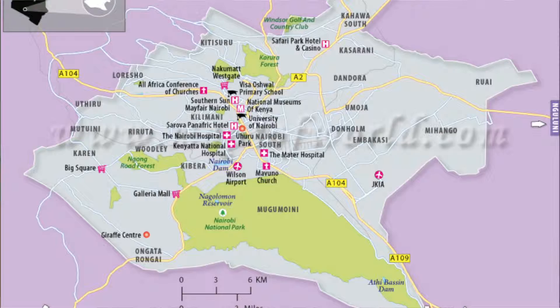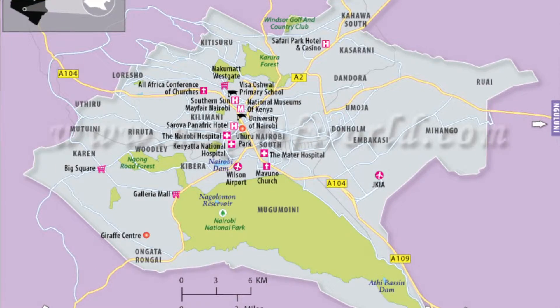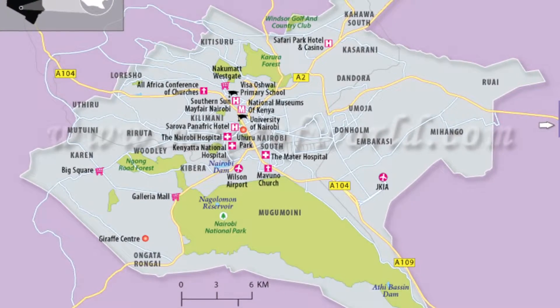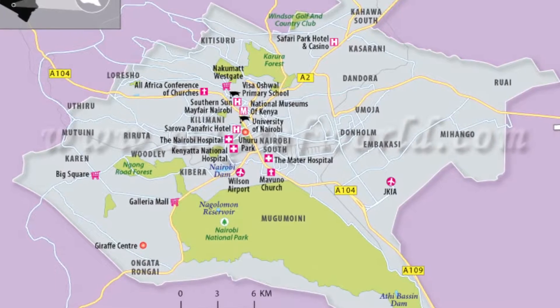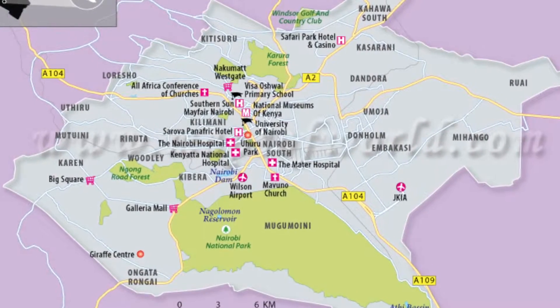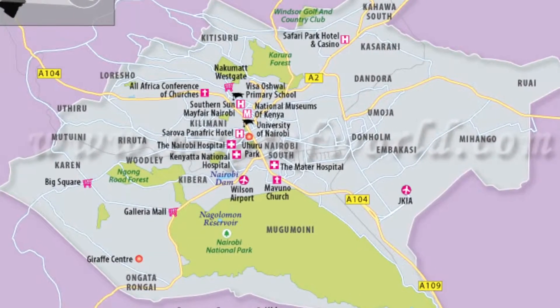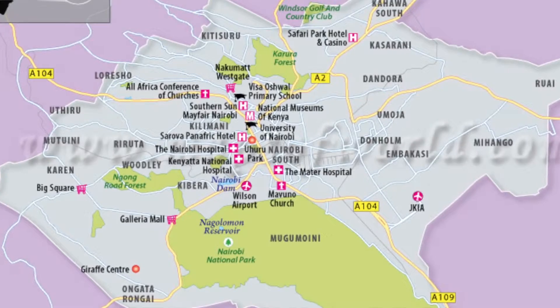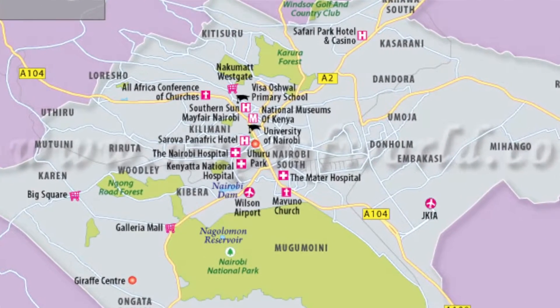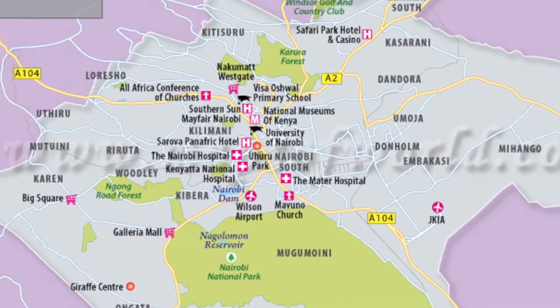What I mean by this is Nairobi has a central business district, and now there are other business districts that are coming up. Westlands is coming up as a business district. Gong Road, that is the Kilimani area. Mombasa Road — another business district on its own.